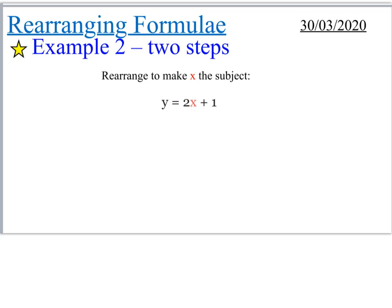So for this next example, we've got two steps to do. So in the last one, we only had one thing to do, either add or subtract, or multiply, or divide. This time, we're going to have to do two of those things together. So we want to make x the subject again. So the first thing we have to do is we're going to have to get rid of this plus 1. The easiest way to get rid of the plus 1 is subtract 1 from both sides. So we end up with y minus 1 is equal to 2x.